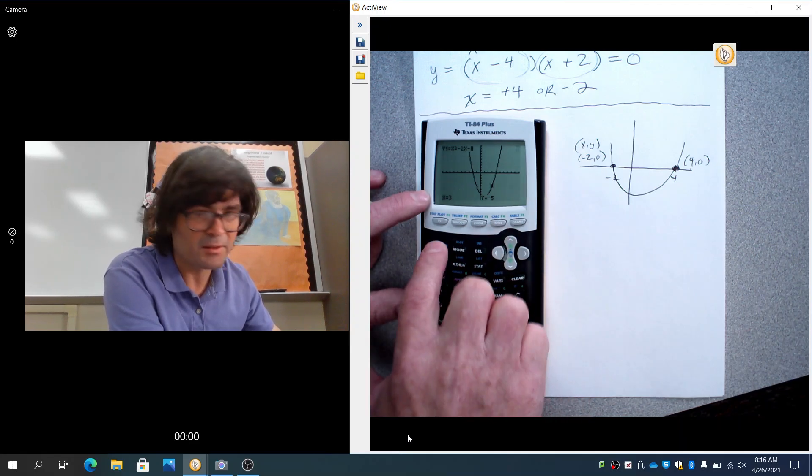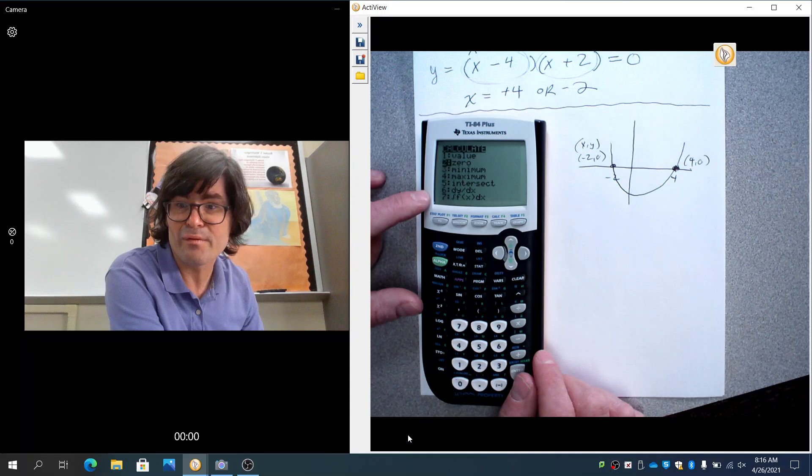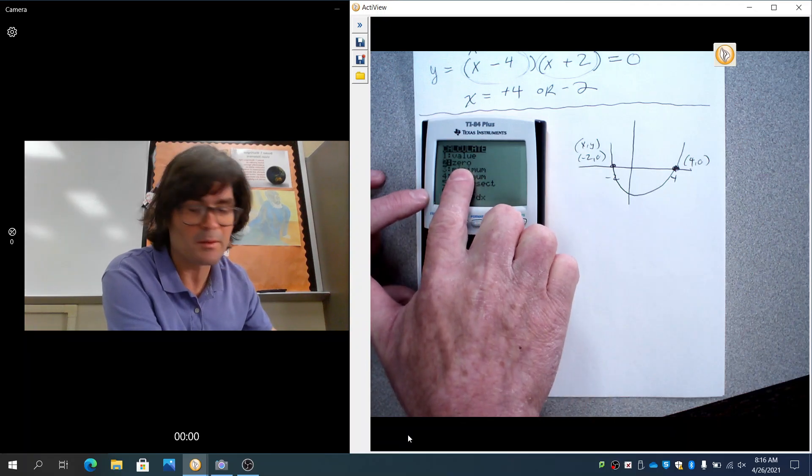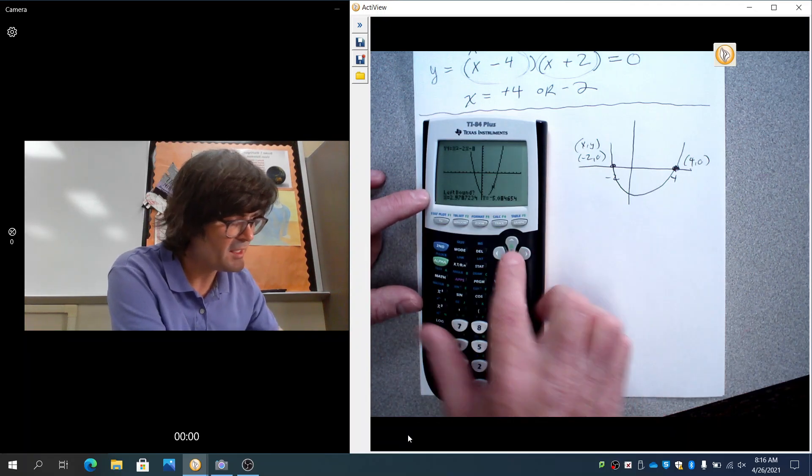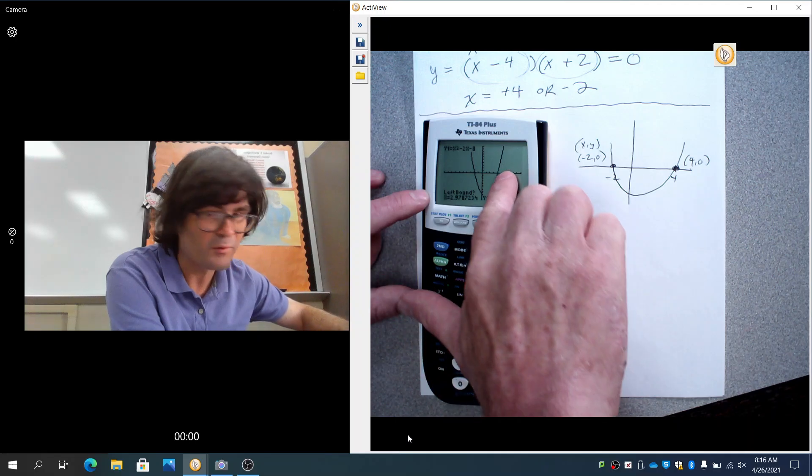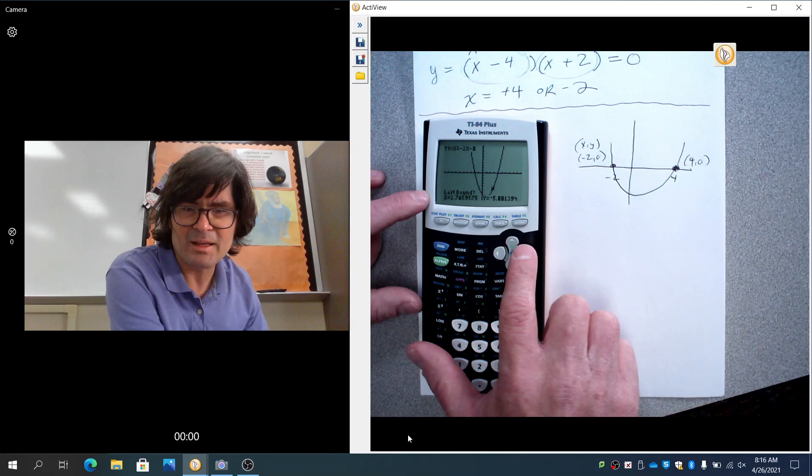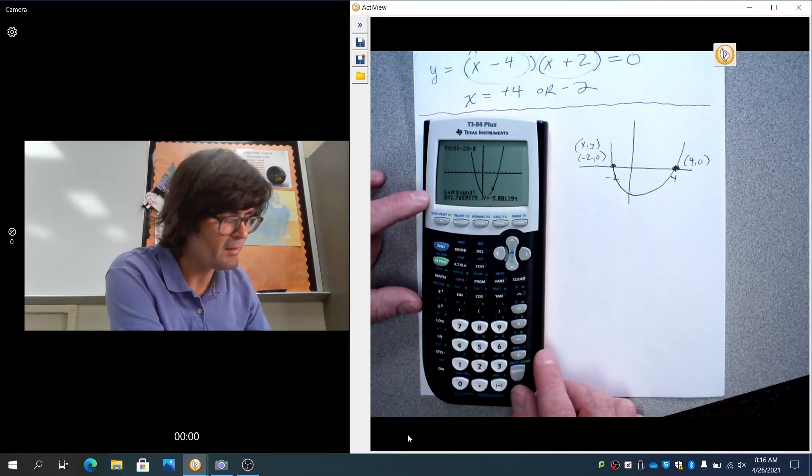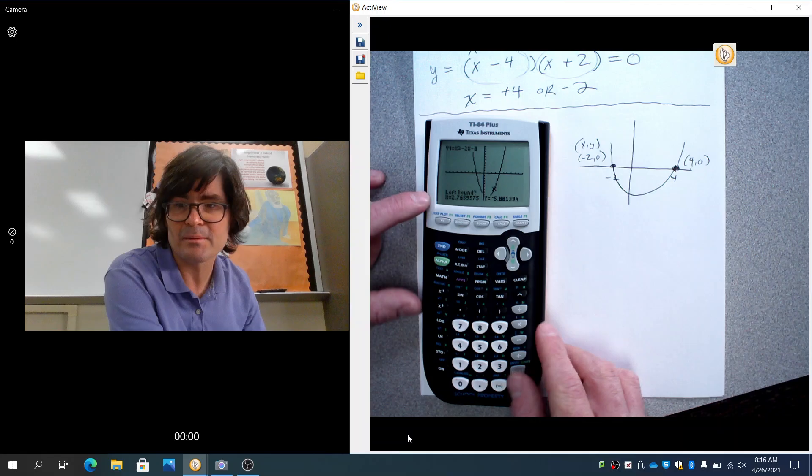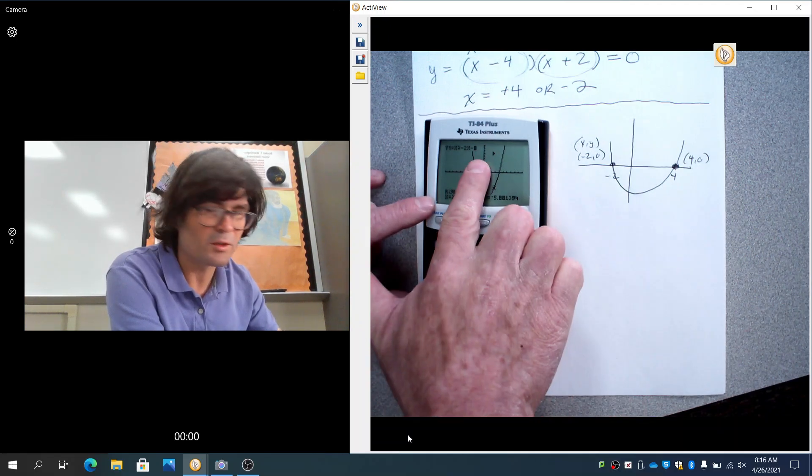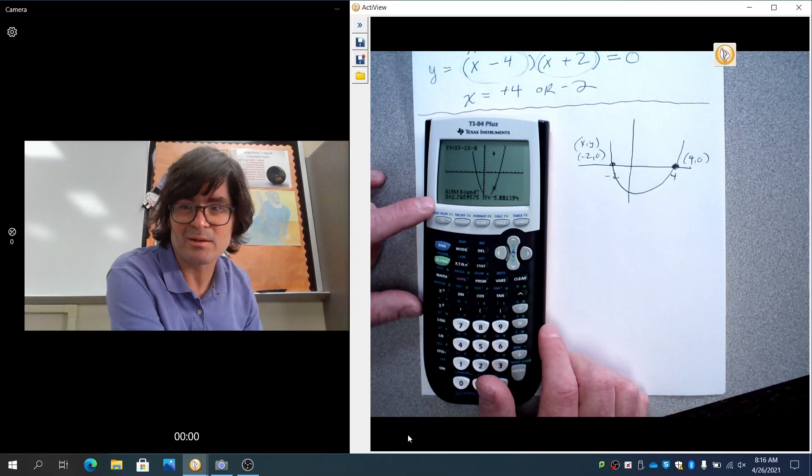If you go to second calc, what that does is it gives you the option to find the 0 automatically. So I'm going to hit second calc, go down to find 0 which is option 2 and then it says pick a point on the left. So I'm going to look for that one right there, the 4. You can use your left and right arrow keys to move the cursor around and that looks good right there. That is on the left of my desired zero. So I'm going to pick that right there. And this little cursor, this little arrow comes up.